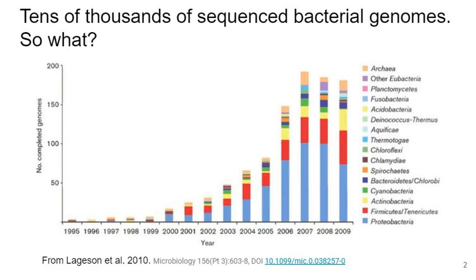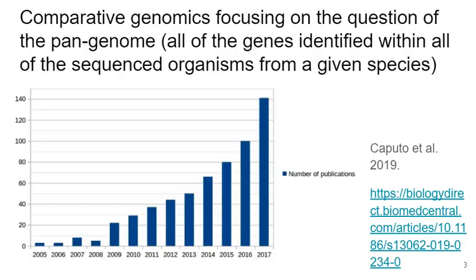And so now, in the post-genomics era, as we have all of these genomes available to us, and as we continue to produce new genomes at what seems to be a faster and faster pace, we have to ask ourselves: what can we actually do with all of this data? And one of the things that has evolved out of this question is the analysis of what are called pan-genomes.